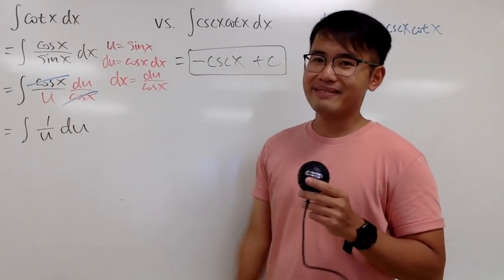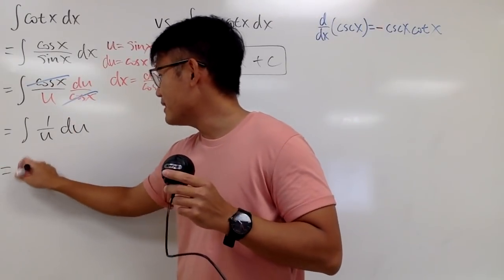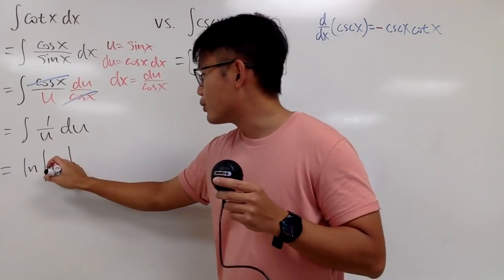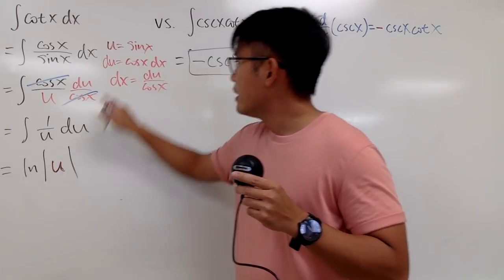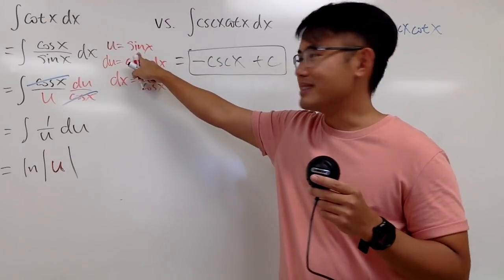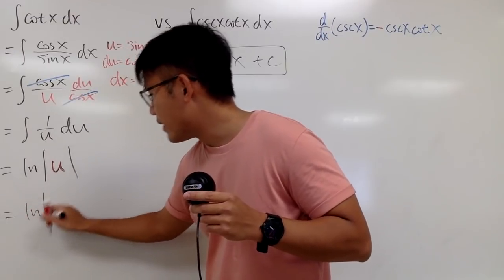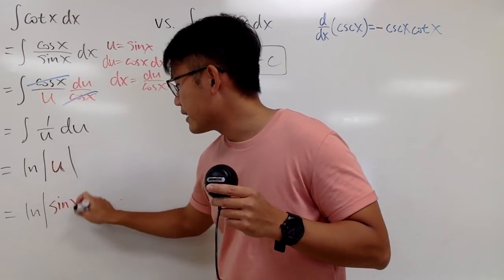And what's the answer for this? Natural log, right? Natural log absolute value of u. And in order for you guys to go back to the x world, take a look that u is sine x. So the final answer is natural log absolute value of sine x.